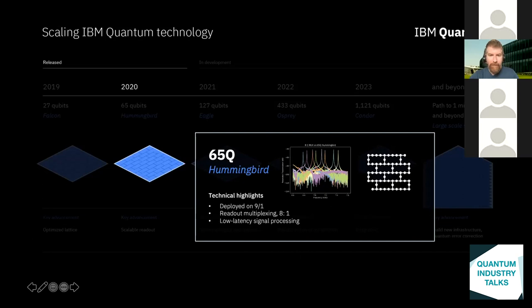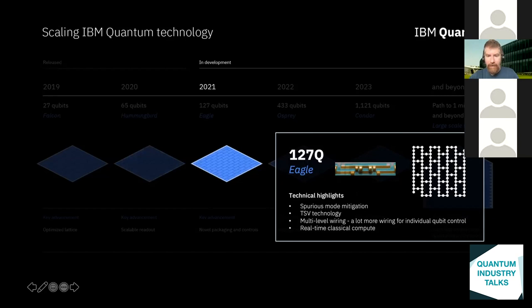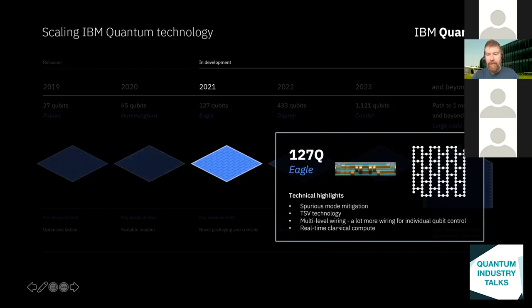Looking to the future is a 127-qubit Eagle device. To address fabrication challenges, we want to use through-silicon vias — connecting the top of a silicon wafer to the bottom — which need to be superconducting and very clean. That will give us spurious mode mitigation, essentially building Faraday cages around our qubits so they don't get affected by neighboring qubits. We also want multi-level wiring, much more akin to what CMOS does, but harder given the material quality quantum computing demands. We also want real-time classical compute — FPGA-controlled logic operating within the coherence time of the qubits — to enable fast feedback or fast feed-forward operations.